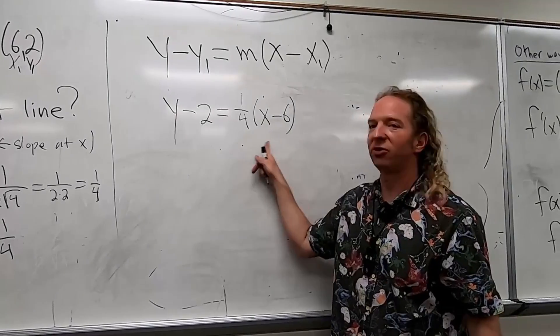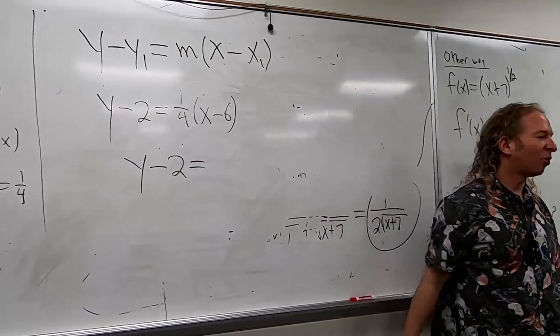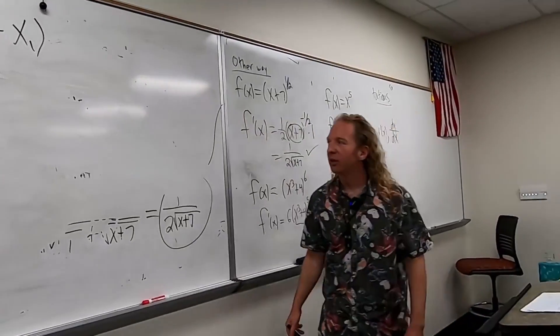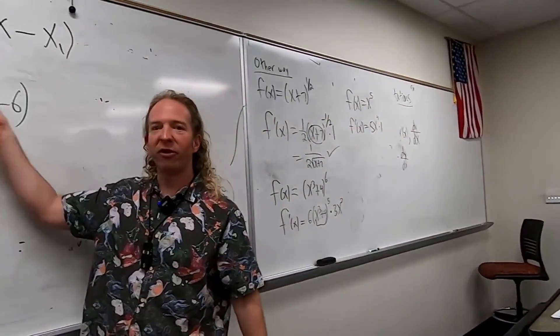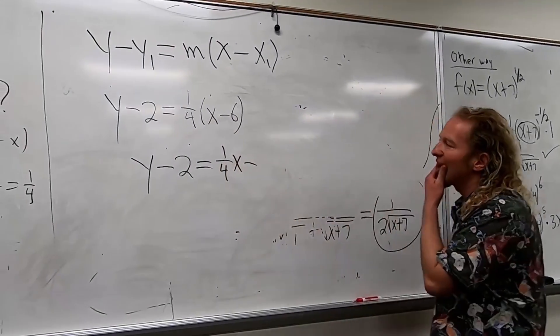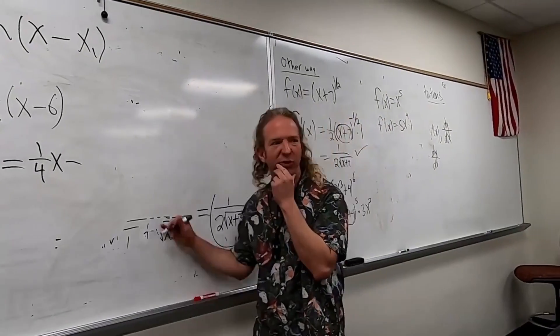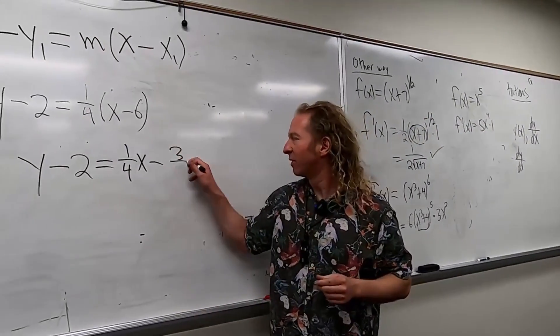I guess we can distribute the one-fourth. So we get y minus 2 equals, so one-fourth x minus, and then one-fourth times 6 is 3 over 2. 3 over 2, 3 over 2.